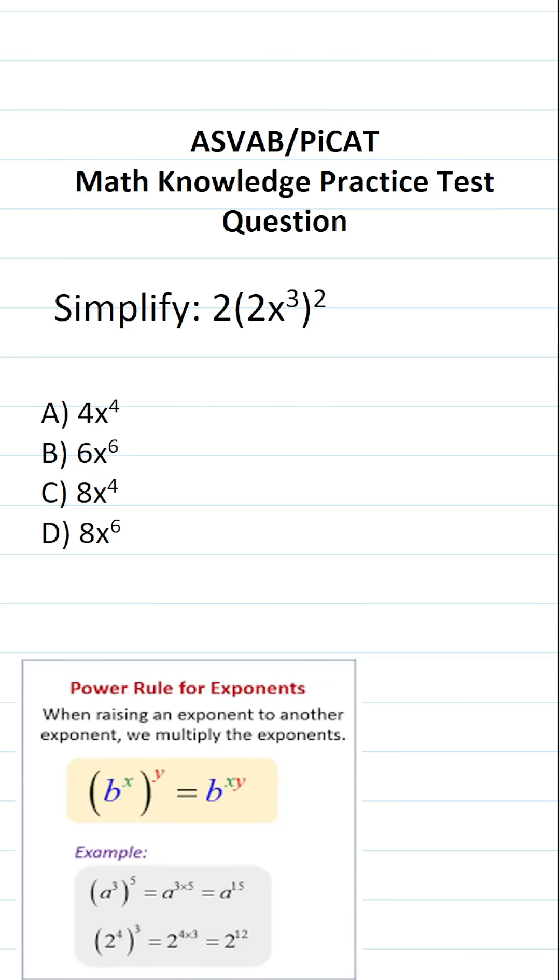This math knowledge practice test question for the ASVAB and PICAT says, simplify 2 times 2x to the third in parentheses all squared.